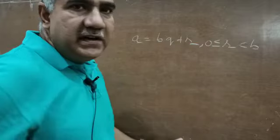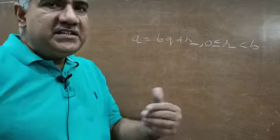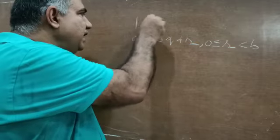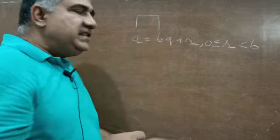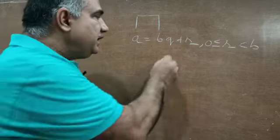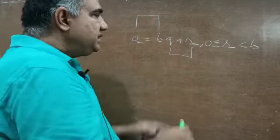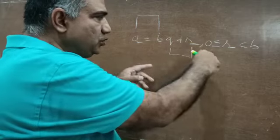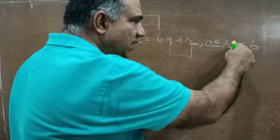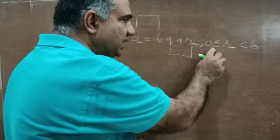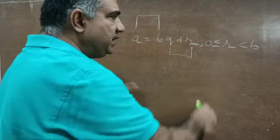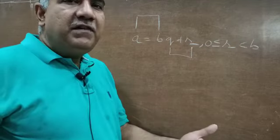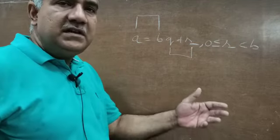This is Euclid's Division Lemma. The statement goes like this: if you are given two positive integers a and b, then there exist two unique integers q and r satisfying the relation a is equal to bq plus r, and another condition it must satisfy is r should always be less than b, but r can be 0 and r can be greater than 0.